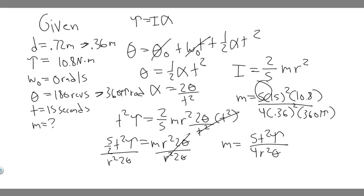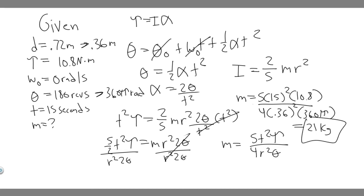So the full expression is: m = (5 × 15² × 10.8) / (4 × 0.36² × 360π). Plugging this into a calculator and rounding gives approximately 21 kilograms. So 21 kilograms is the mass of the sphere.